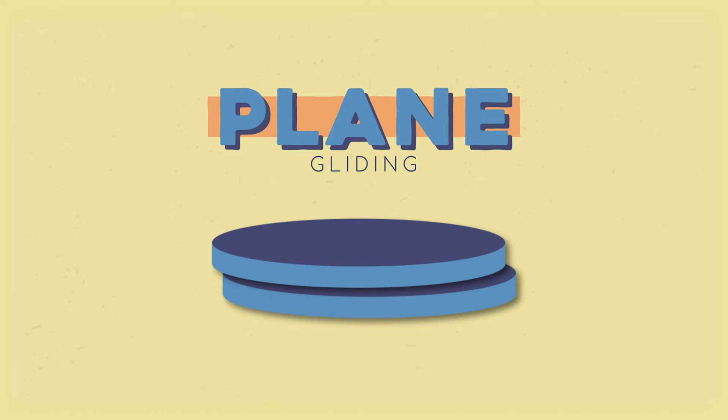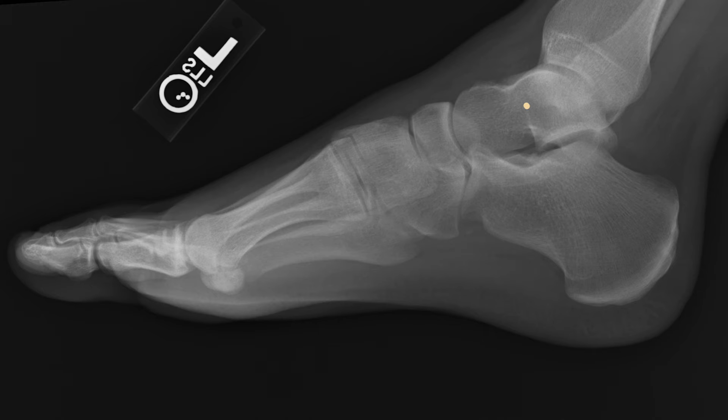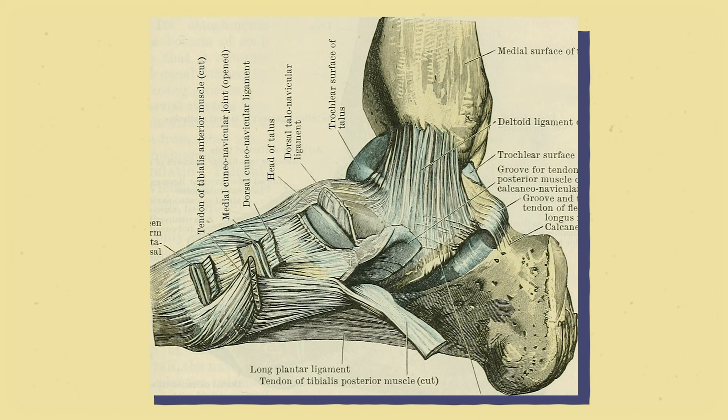The most well-known plane joints are the intercarpal and intertarsal joints — look at all those ligaments keeping them together. They might not seem like they have a ton of motion, but they can still move a bit. Ask anyone who's dislocated their lunate.